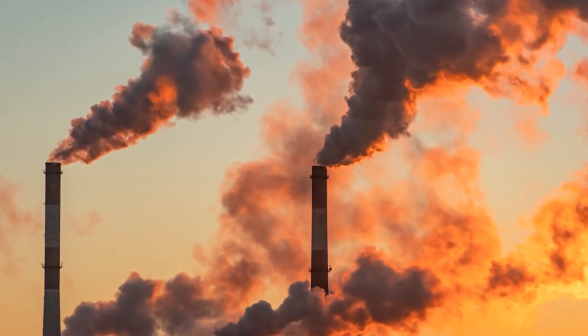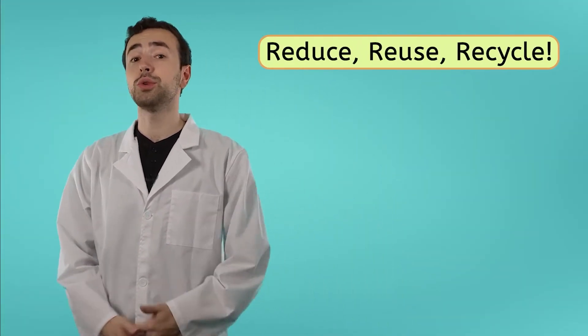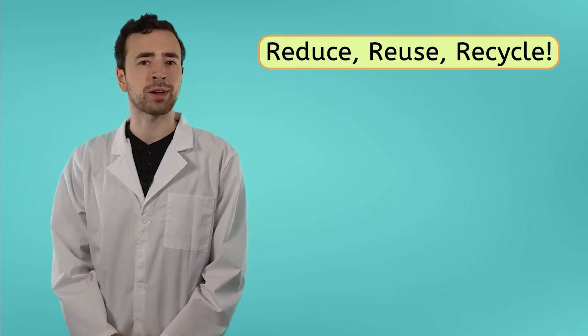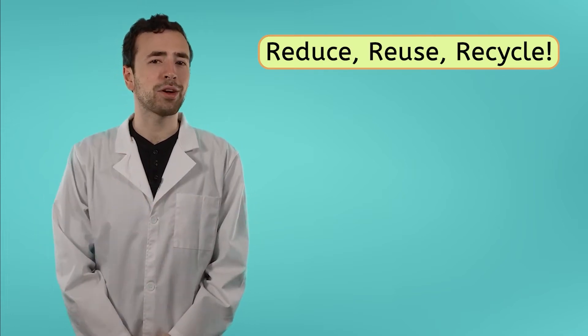A lot of pollution comes from burning fossil fuels to generate electricity. Remember to turn off your lights and unplug any devices in order to save electricity. Less power used means less needs to be generated. One of the most important things individuals can do to combat pollution is to reduce, reuse, and recycle—also known as the three R's. We'll be learning all about that in our next lesson.